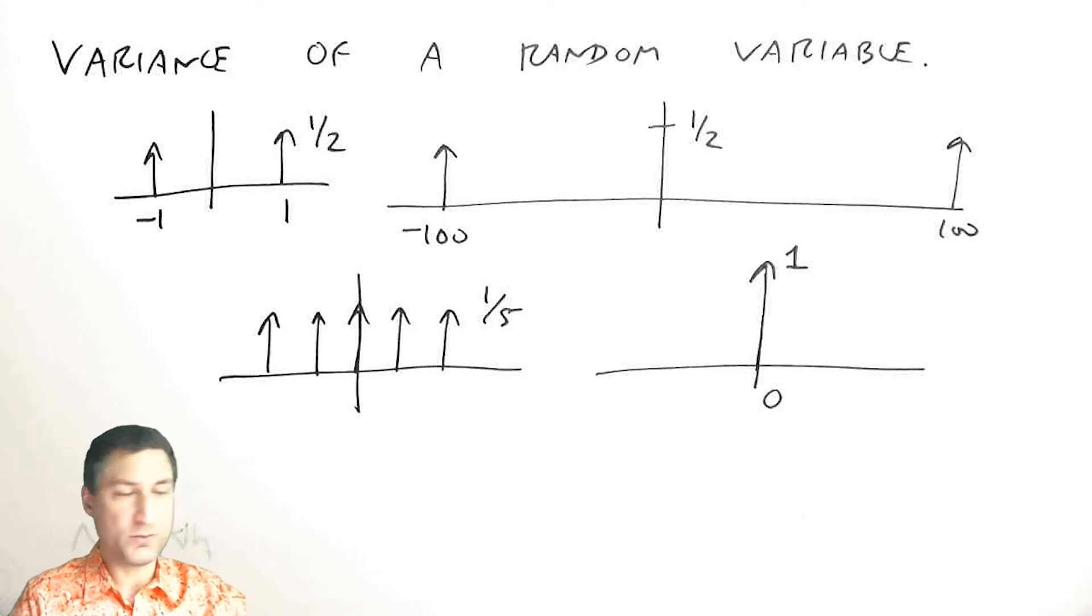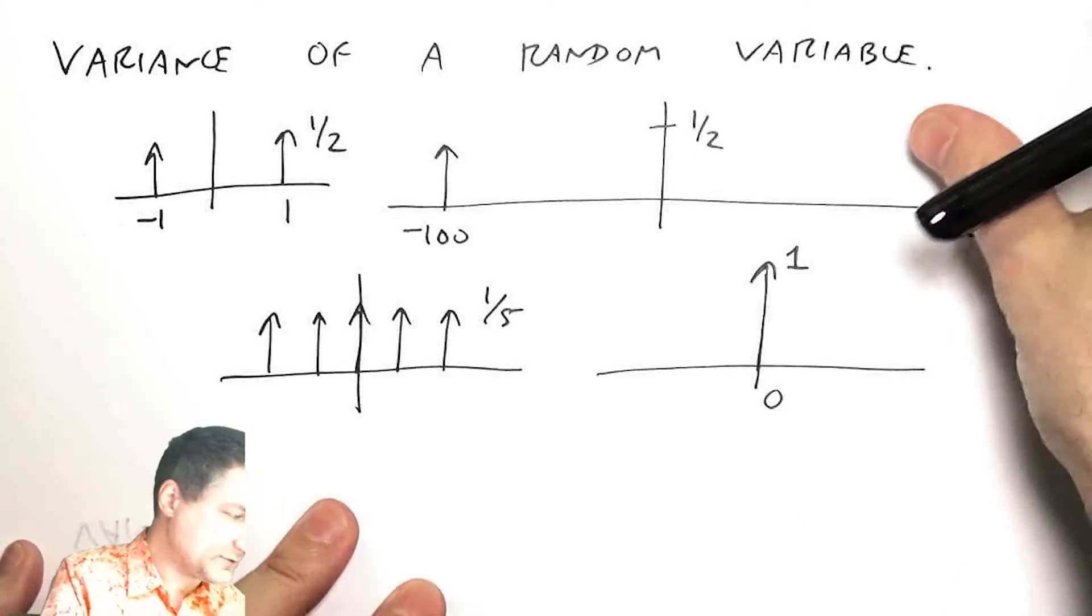It's basically a measure of how far away do we expect the random variable to be from its mean. So let's write that down in a formal way.